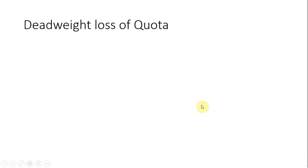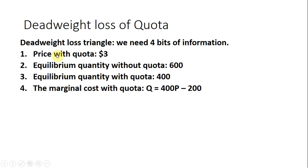The last thing here, we'll look at the deadweight loss of the quota. We need four bits of information to calculate the deadweight loss triangle. We need the price with the quota, which we found was $3.